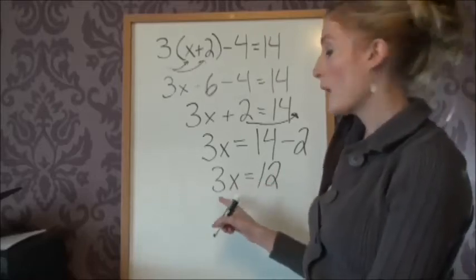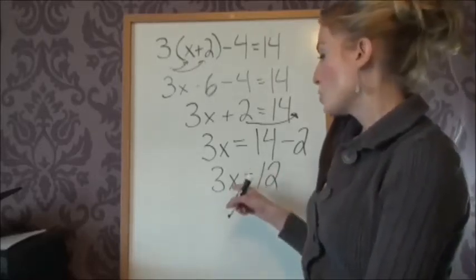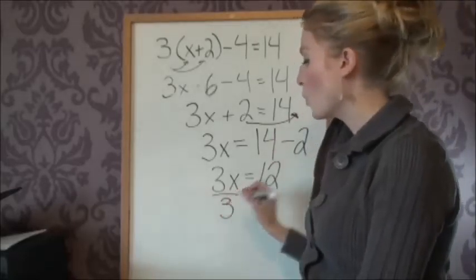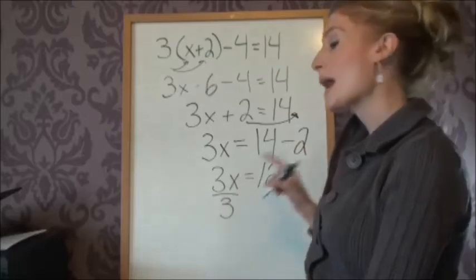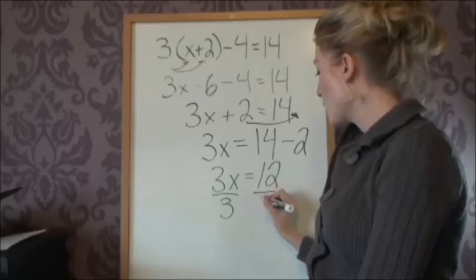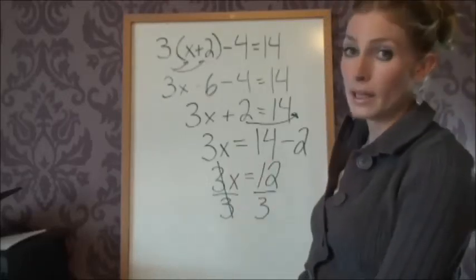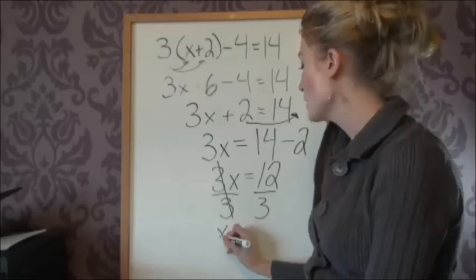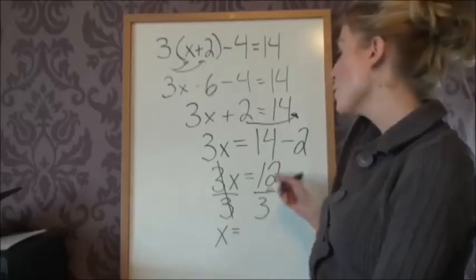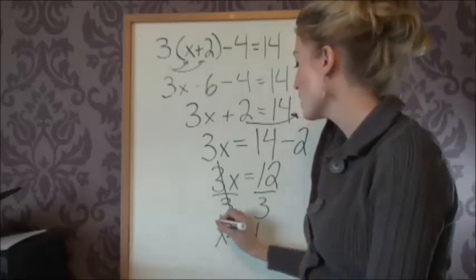Now to solve, we have to isolate the x, right? Which is what we've been doing. So there's a 3 in front of it. We're just going to divide that 3 out. And whatever we do to one side, we have to do to the other side. So if we're going to divide 3 on this side, we have to divide by 3 on this side. These will cancel. That's why we did it, giving us just an x. And we just simplify this if we can. So 12 divided by 3 is 4. And that's our one solution.